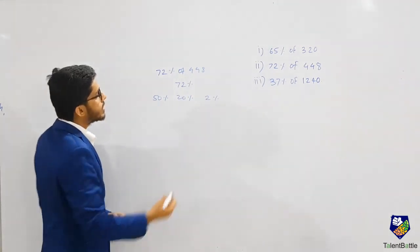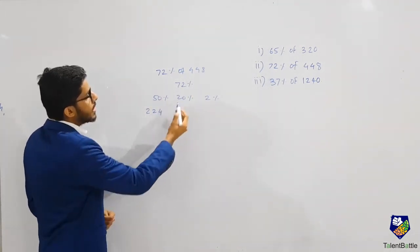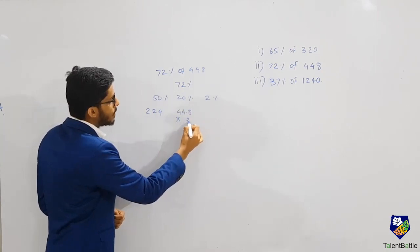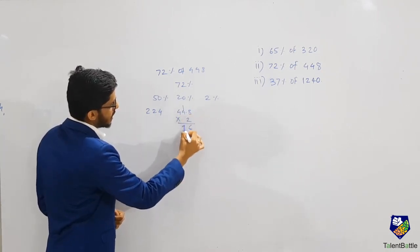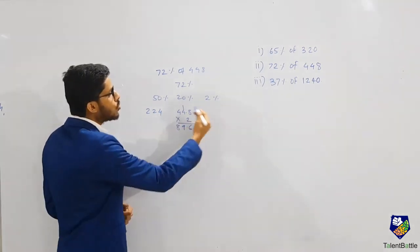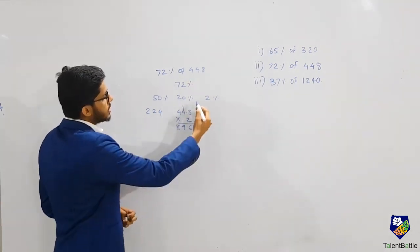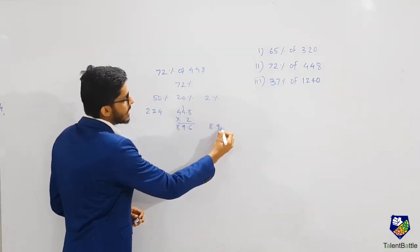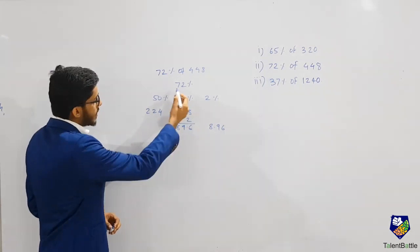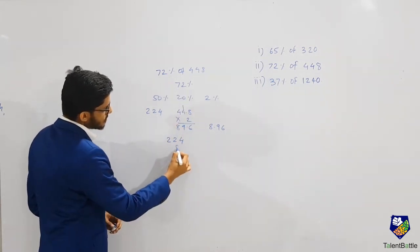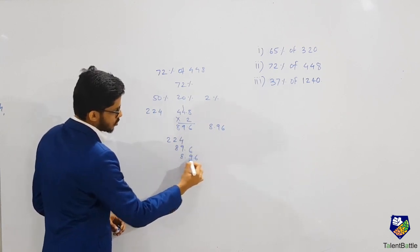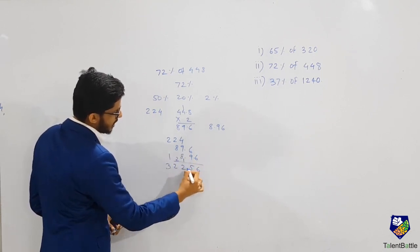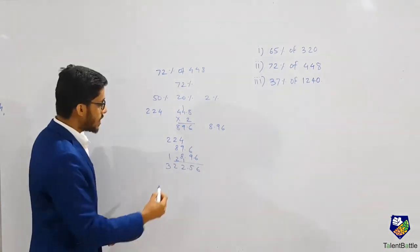50 percent of 448 is half of 448, which is 224. 10 percent of 448 is 44.8, so 20 percent is double that: 89.6. Since 20 percent of 448 is 89.6, 2 percent of 448 is directly 8.96 — no need to recalculate. So 72 percent equals 50 percent plus 20 percent plus 2 percent, giving 224 plus 89.6 plus 8.96, which equals 322.56.